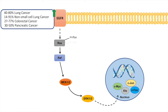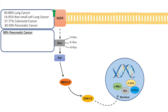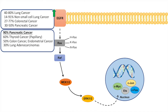Out of all RAS protein mutations, pancreatic cancer is the most important to remember — 90% of pancreatic cancers are estimated to be caused by a mutation in RAS, typically KRAS. Other cancers associated with RAS mutations include thyroid cancer (about 60%), colon cancer (50%, usually KRAS), endometrial cancer (50%), lung adenocarcinomas (about 30%), and myeloid leukemias (about 30%, usually NRAS).